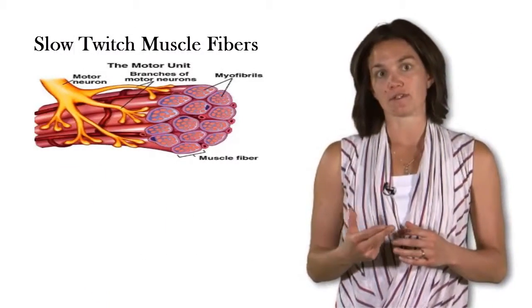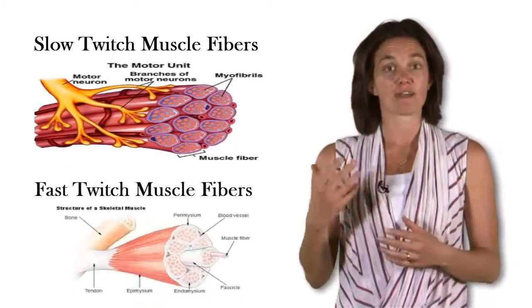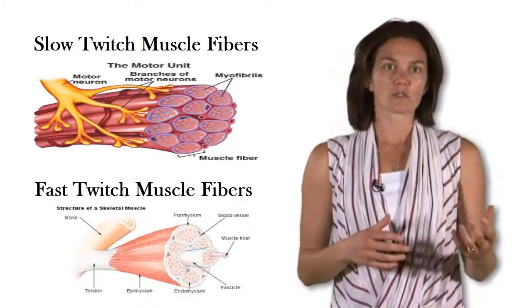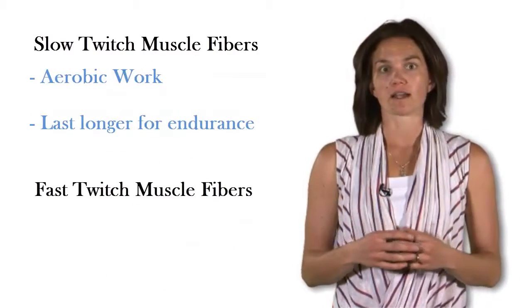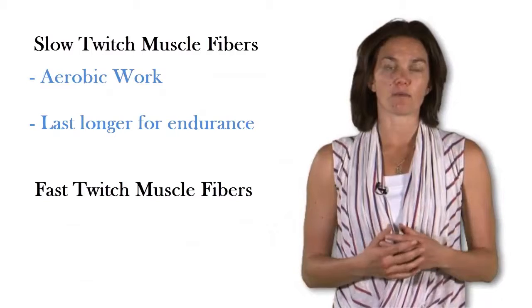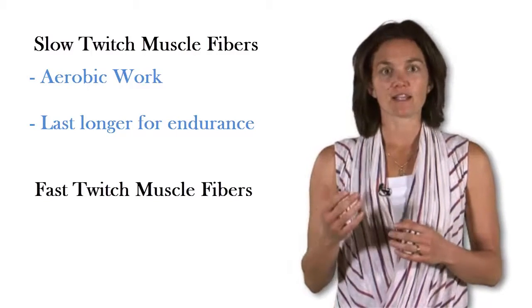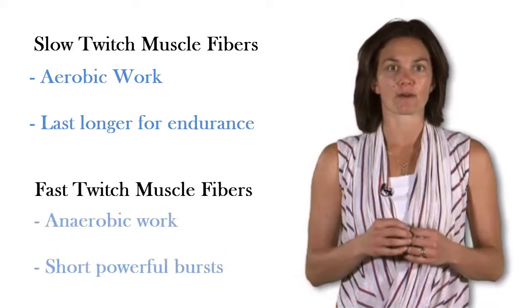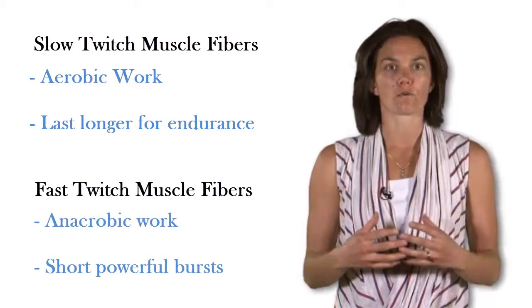There are two types of muscle fibers in your body: slow twitch and fast twitch. Slow twitch fibers are meant for aerobic work and can contract for longer periods of time without fatiguing. Fast twitch fibers are meant for anaerobic work and produce more overall force.